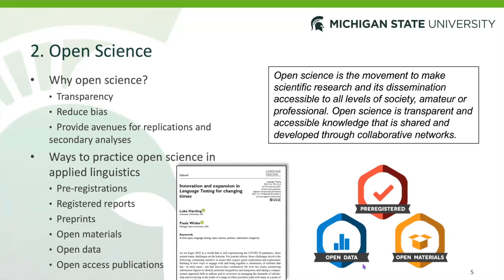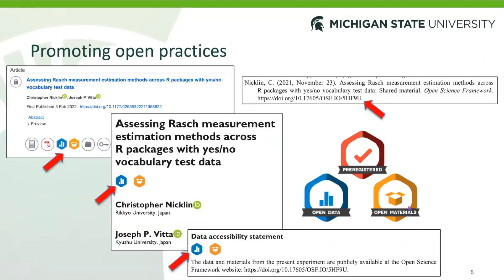For those that practice open science, the Open Science Framework will award you a badge, and this will be tied to your manuscript. Looking at the Language Testing table of contents in our online first section, we have some nice examples. This paper by Nicklin and Vito has just been published, and these authors shared materials and data. The materials they shared was R code where you can actually rerun a simulation used in the study. So they got two badges representing open data and open materials. This is available in the table of contents and also in the PDF of the manuscript.